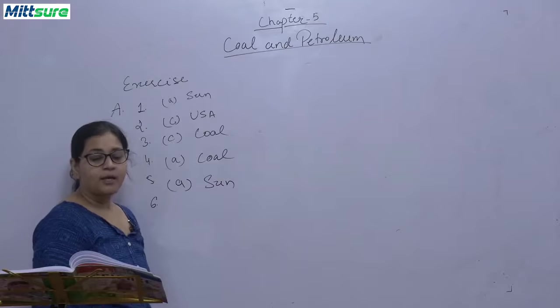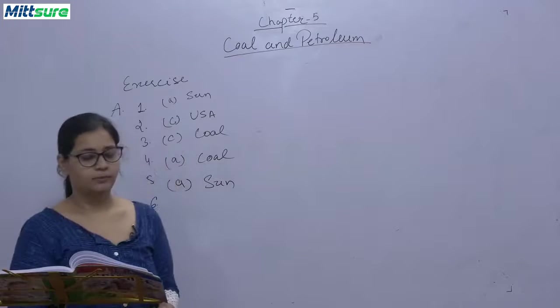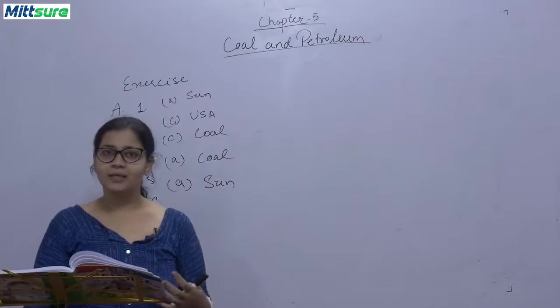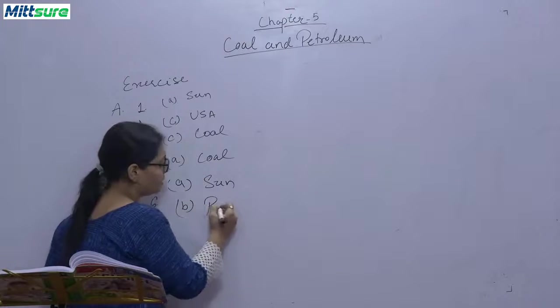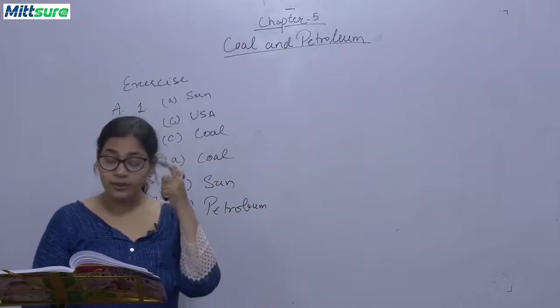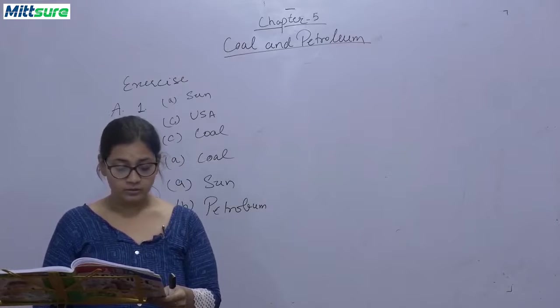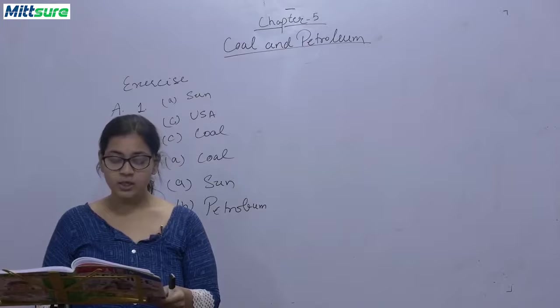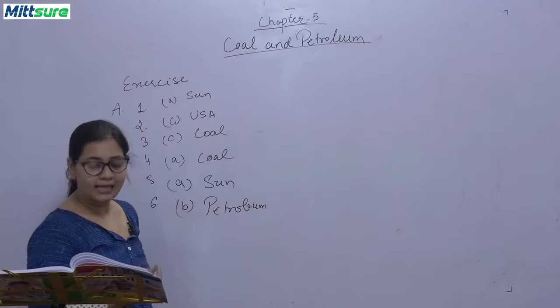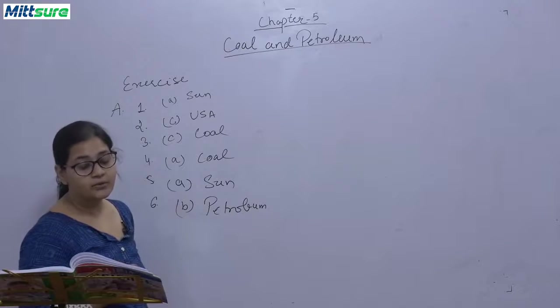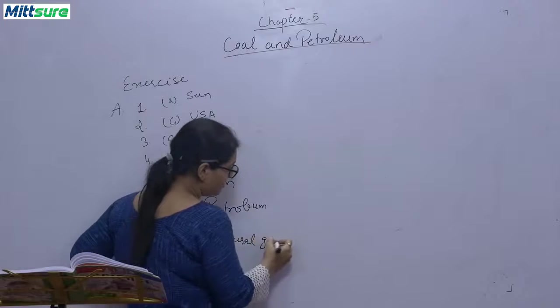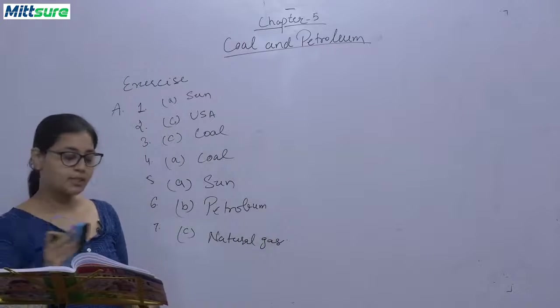Sixth, natural gas is found with A coal, B petroleum, C natural gas, D none of these. Natural gas is found with petroleum, it is not found with coal. So the correct answer is B petroleum. Seventh, the burning of which fuel produces the least amount of carbon dioxide per unit of energy? Options are A coal, B oil, C natural gas, D all produce the same amount. The correct answer is C natural gas. Please note down the answers. We will be discussing the next question.